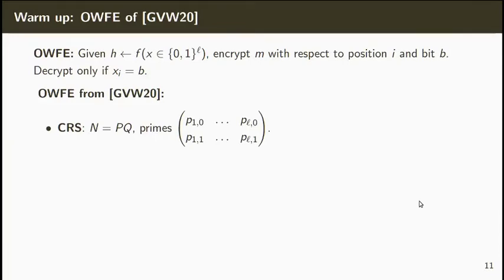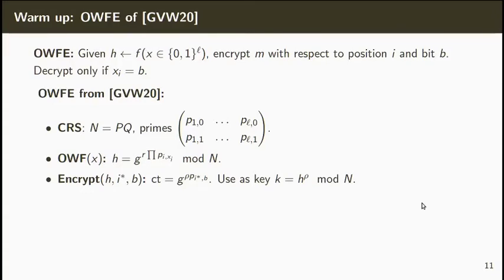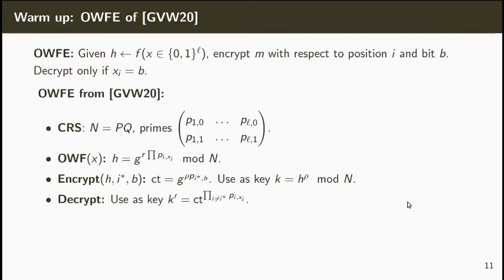In the one-way function with encryption by Goyal et al., the CRS is composed by an RSA modulus n and two L uniformly chosen prime numbers. To compute the one-way function on an input string x, we first choose a random element r and compute g to the r times the product of the primes p_i^{x_i} modulo n. Given H, a position i* and a bit b, the encryptor chooses a random element rho and computes a ciphertext which is g to the rho times p_{i*,b}. It uses as the shared key the value h to the rho modulo n. Finally, the decryptor computes a key k', which is the ciphertext to the product of the primes p_i^{x_i} for i different than i*. It is easy to see that if x_{i*} equals b, then k' equals k.